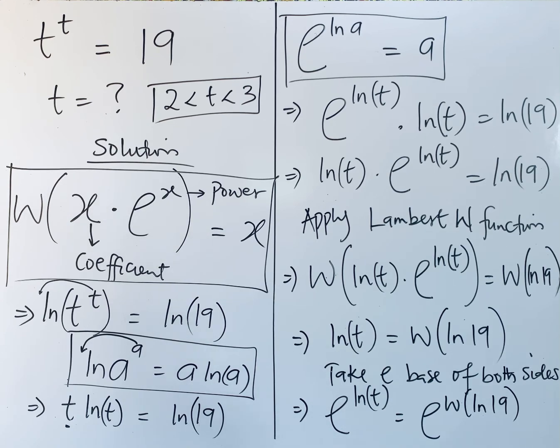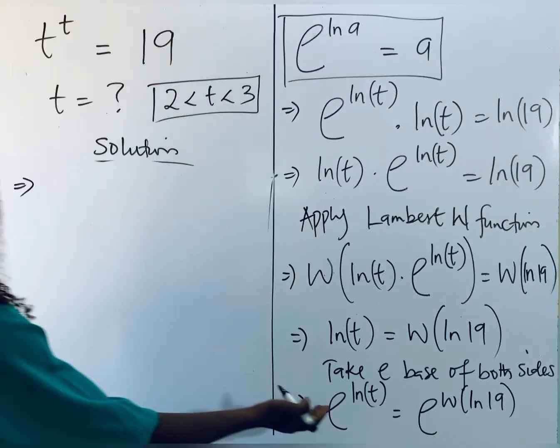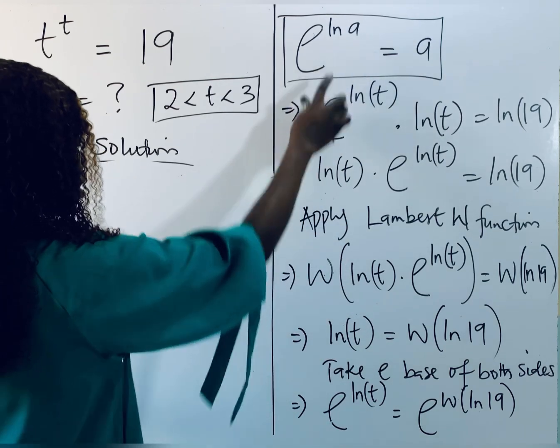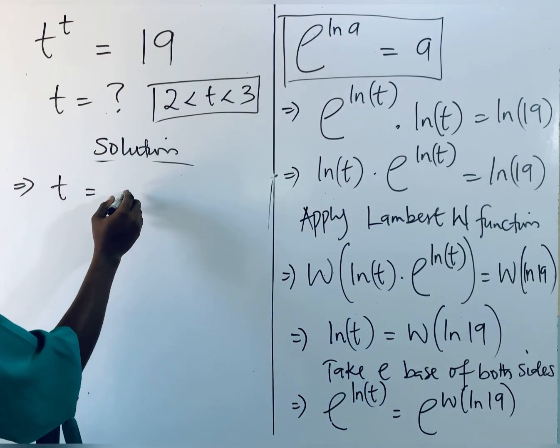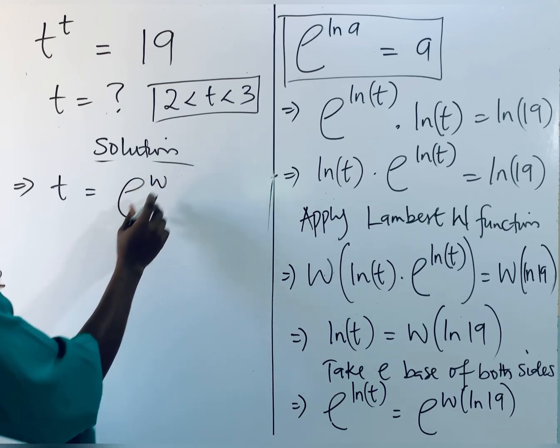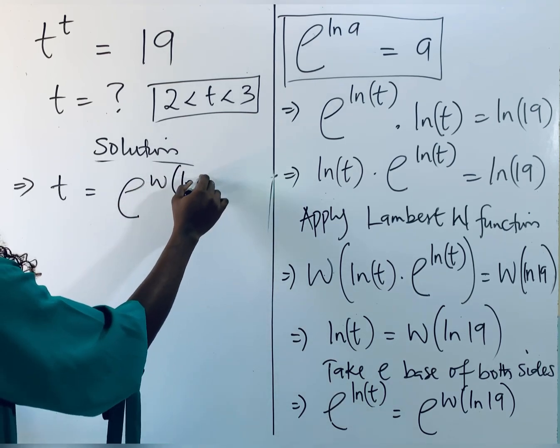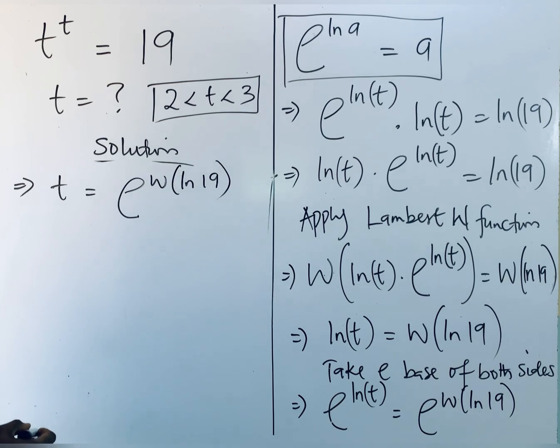So what do we do? Remember that obeying this, this is going to give us t. So we have t equals e to the power of Lambert W of ln of 19.